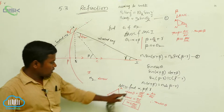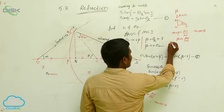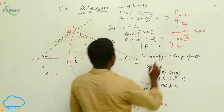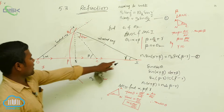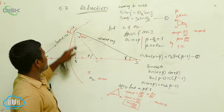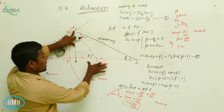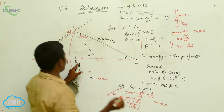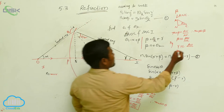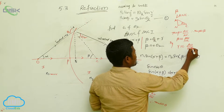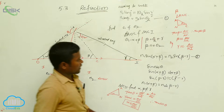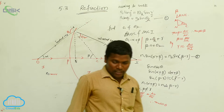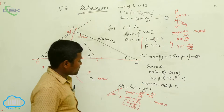The remaining angle is gamma. Similarly, gamma is equal to AN by NI. So now we have obtained the alpha value, the beta value, and the gamma value.